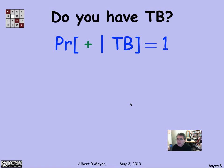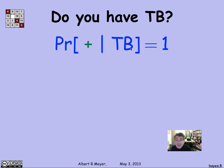What do we know about the test? Let's translate the information we have into the language of conditional probability. The first thing we said was the test is guaranteed to get it right if you have TB. So given that you have TB, the probability that the test will say so — it will return a positive result — is 1.